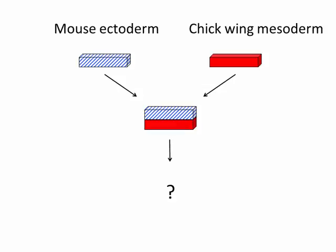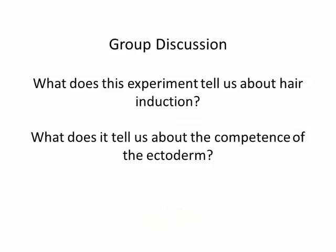Now for a couple of experiments that seem a little wild. What do you think happens when they combine the mesoderm from a chick wing with the ectoderm of a mouse? The ectoderm formed a hair. Back to your groups: what does this experiment tell us about hair induction? What does it tell us about competence?